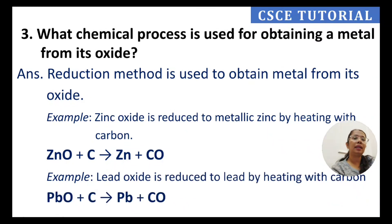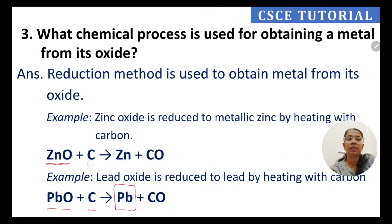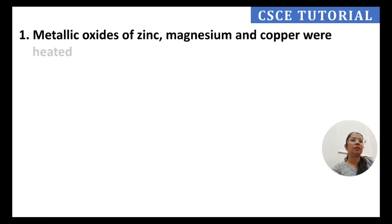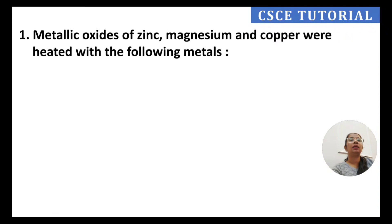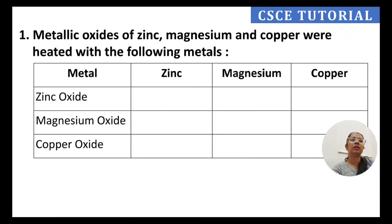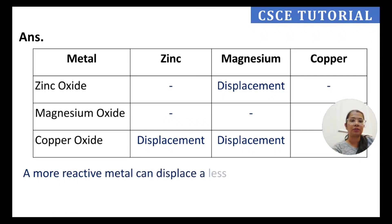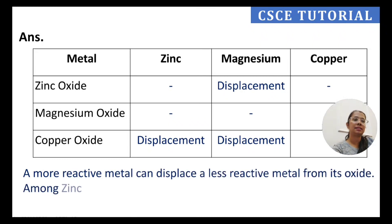When zinc oxide is reacted with carbon and heated, the zinc oxide is reduced and pure zinc metal is obtained. Similarly, when lead oxide is heated with carbon, pure lead is obtained. The key observation from the chart is that a more reactive metal can displace a less reactive metal from its oxide.